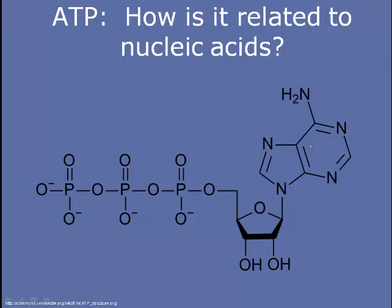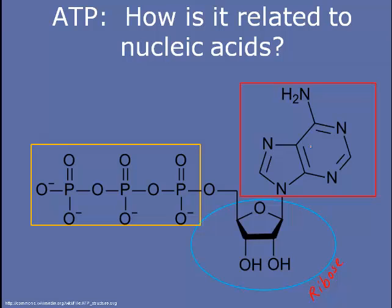How is ATP related to nucleic acids? If we take a look at ATP, we'll notice that it's really just a slightly different RNA nucleotide. It's still made up of a sugar, ribose. It still has a nitrogenous base, in this case adenine. And instead of one phosphate, it actually has three phosphates.